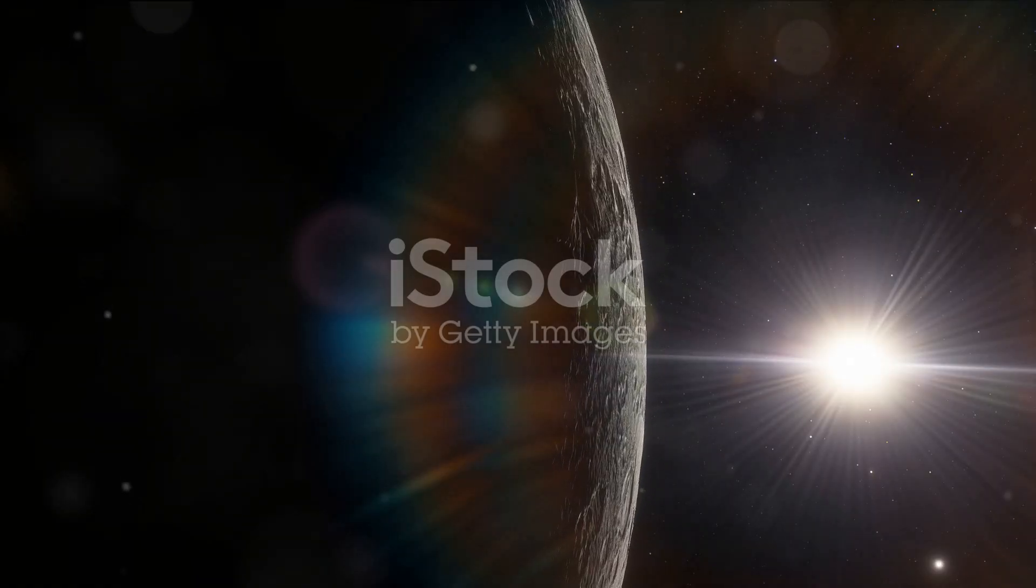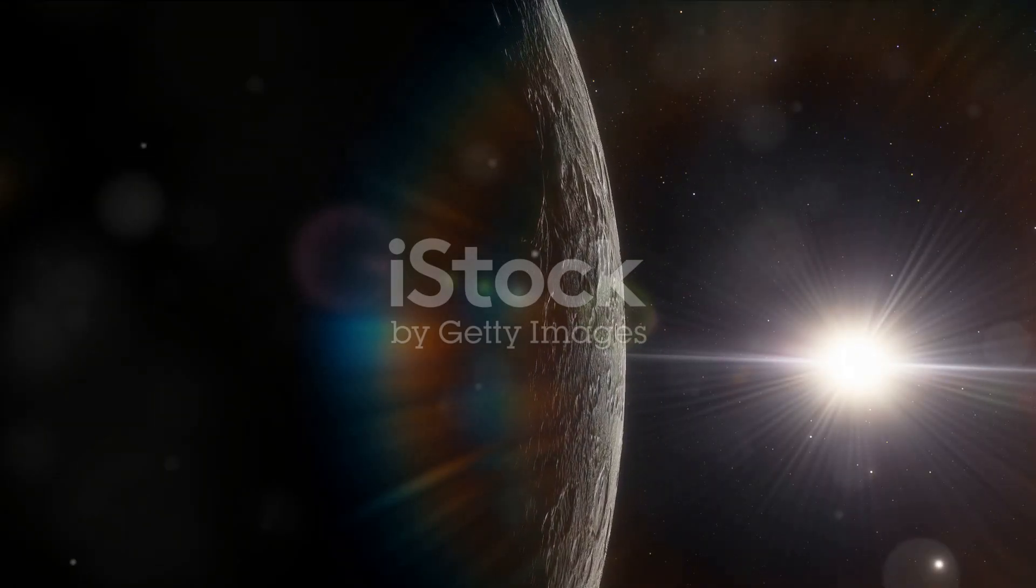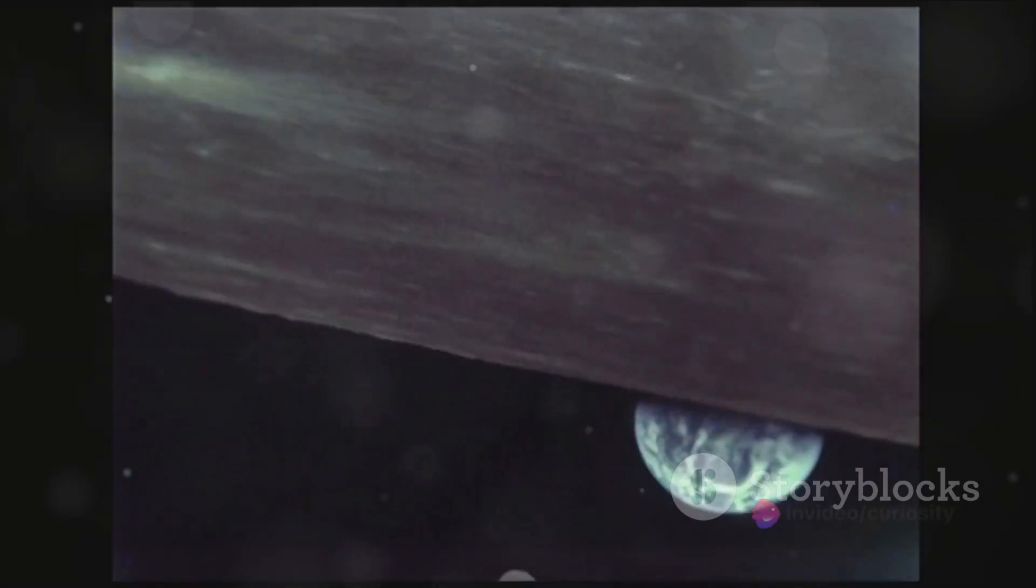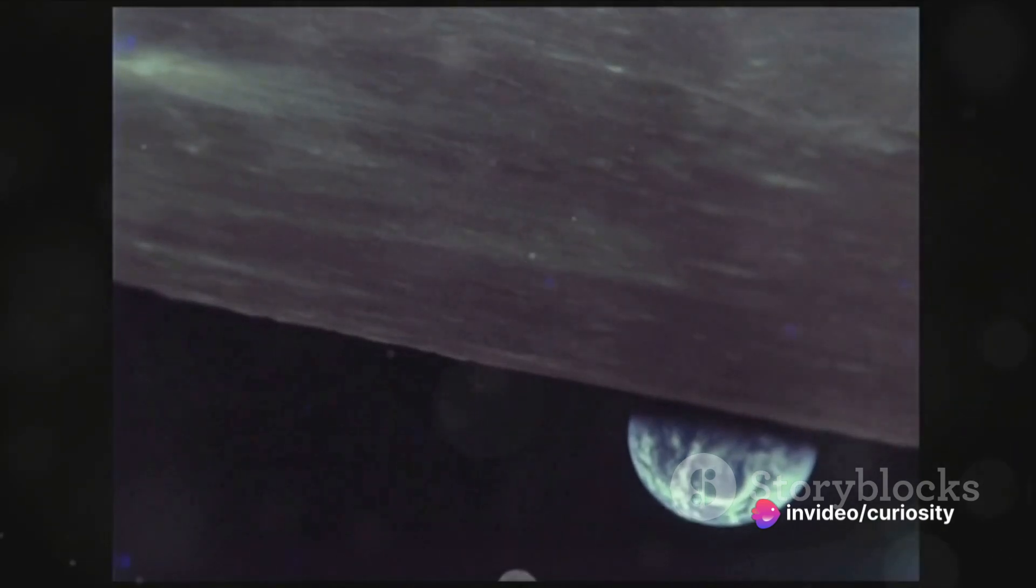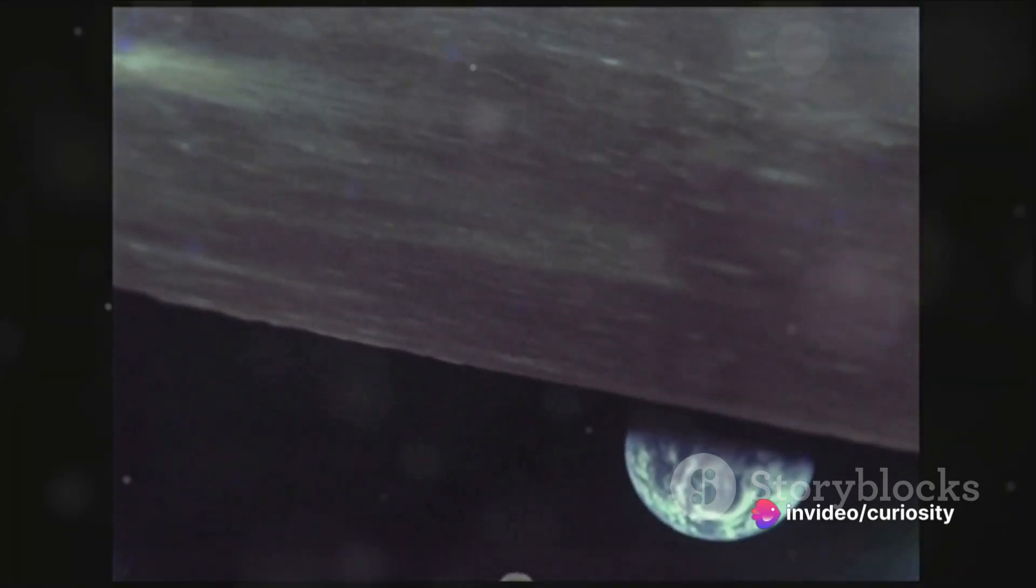Moreover, Mercury is one of the two planets in our solar system, the other being Venus, that has no moons. Sounds familiar? That's right, until around 4.5 billion years ago, Earth too was moonless.